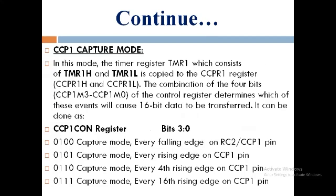In CCP-1 Capture Mode, the timer register TMR1, which consists of TMR1H and TMR1L, is copied to the CCPR1 register (CCPR1H and CCPR1L). The combination of the 4 bits CCP1M3 to CCP1M0 of the control register determines which event will cause the 16-bit data to be transferred. This is set via the CCP1CON register bits 3 to 0.